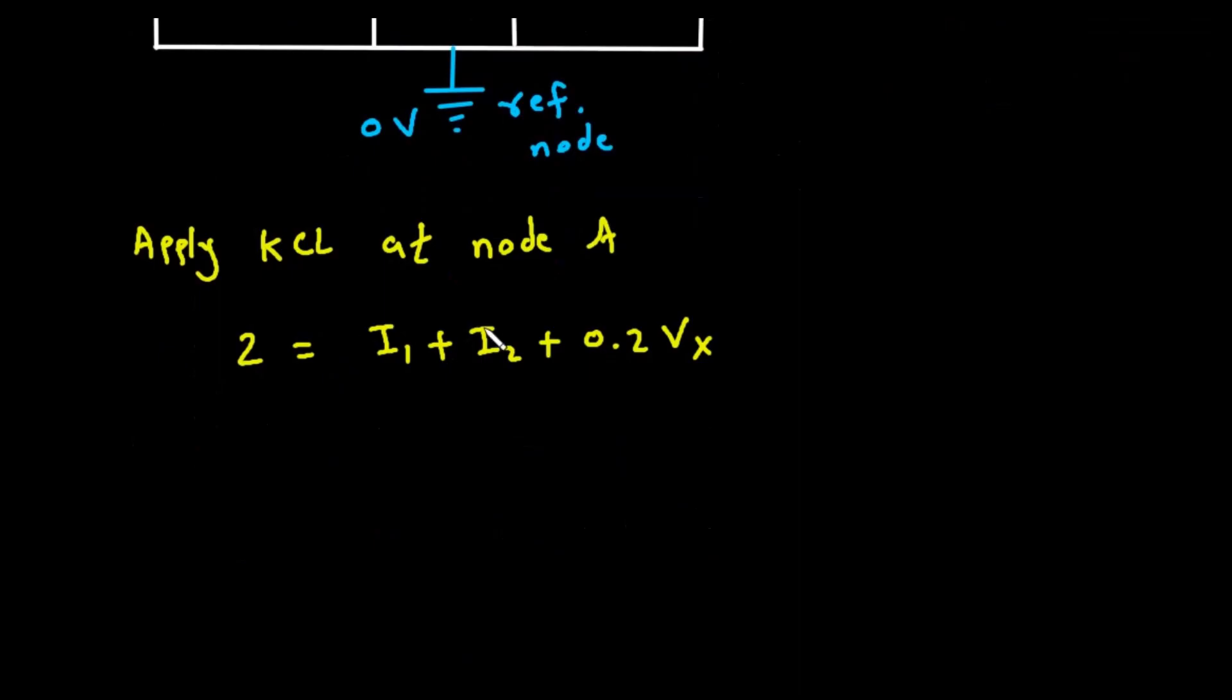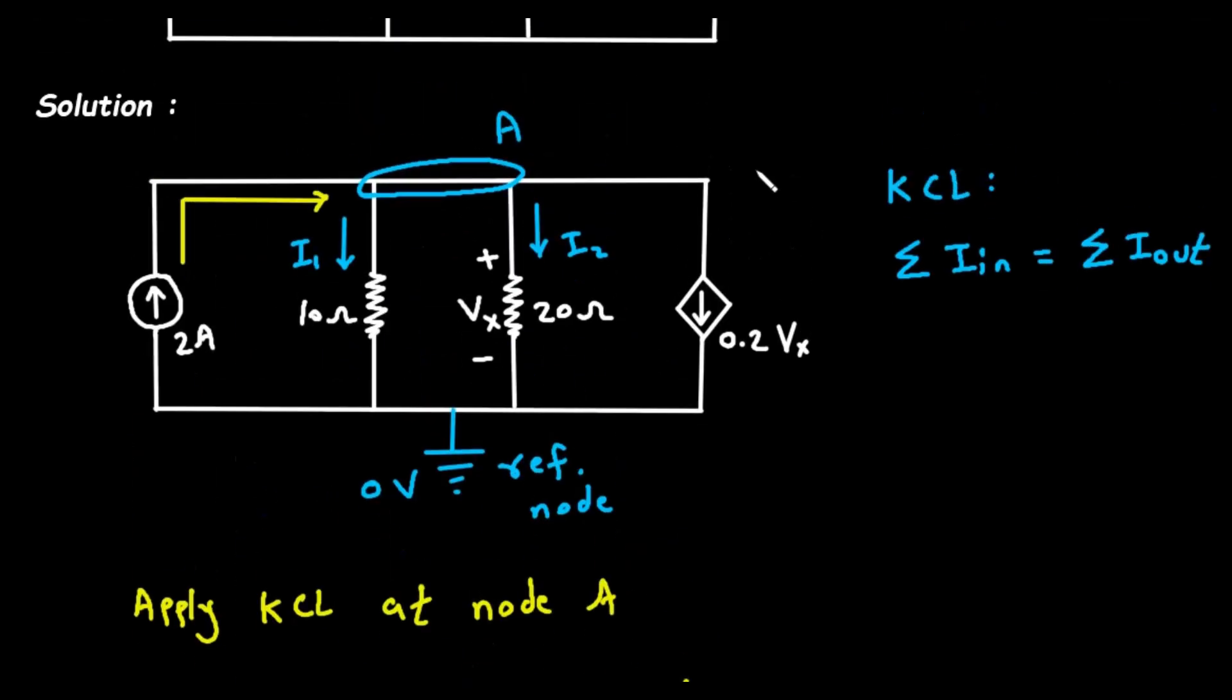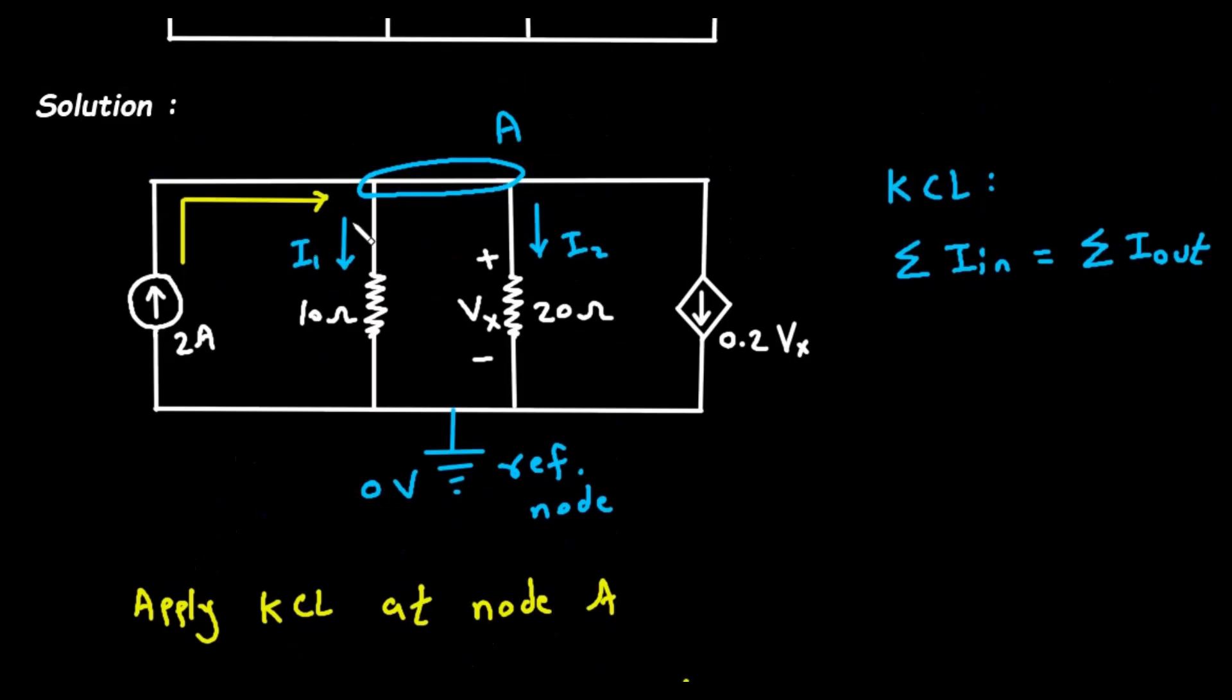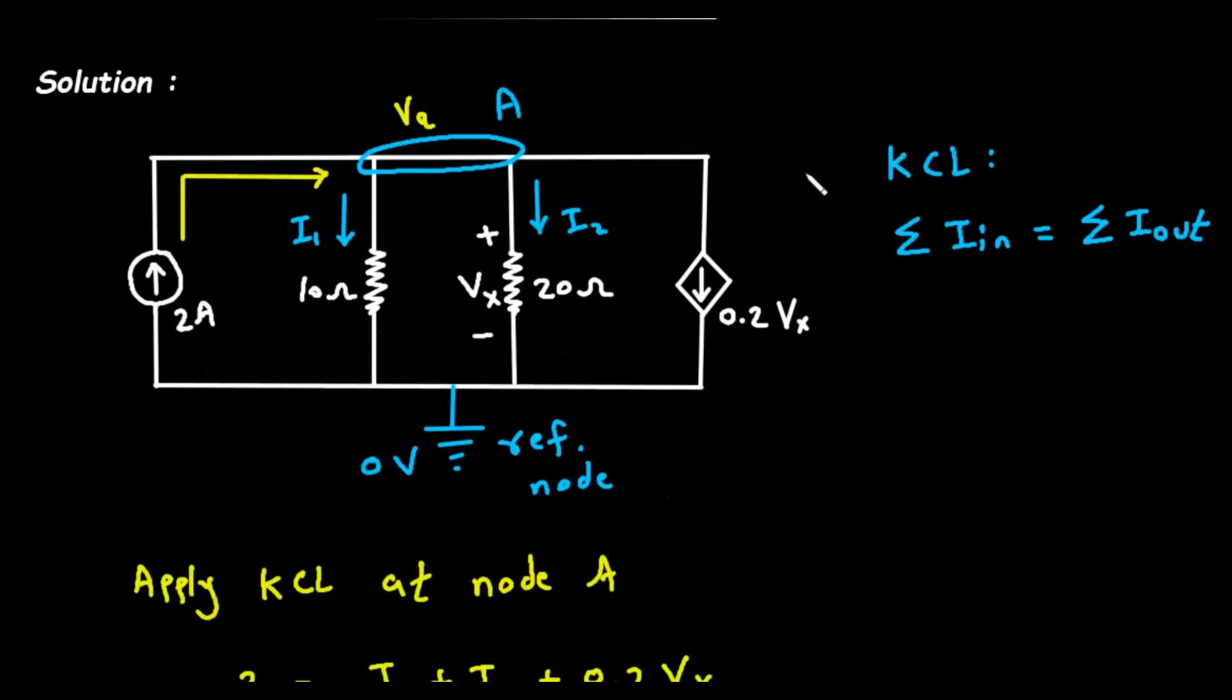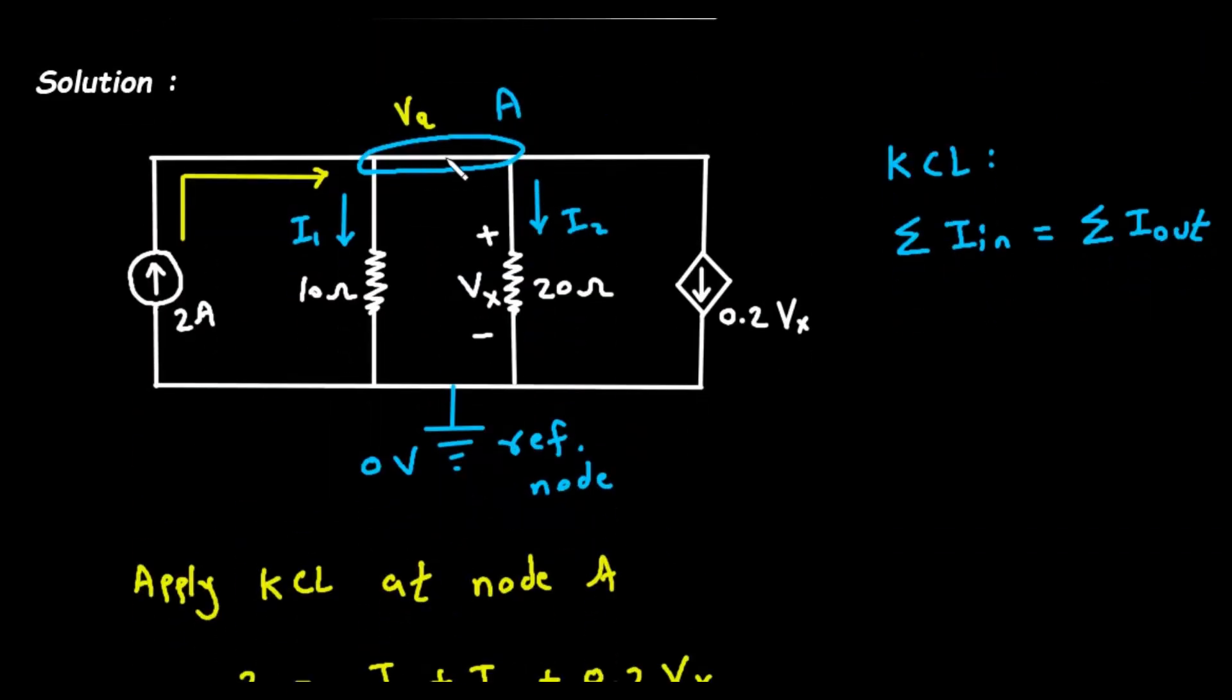Now let's put this in voltage form. So 2 equals I1. I1 equals Va minus 0 divided by 10. Va minus 0 divided by 10 plus I2. Now I2 is Va, this node voltage is Va minus 0 divided by 20. Va minus 0 divided by 20 plus 0.2Vx.